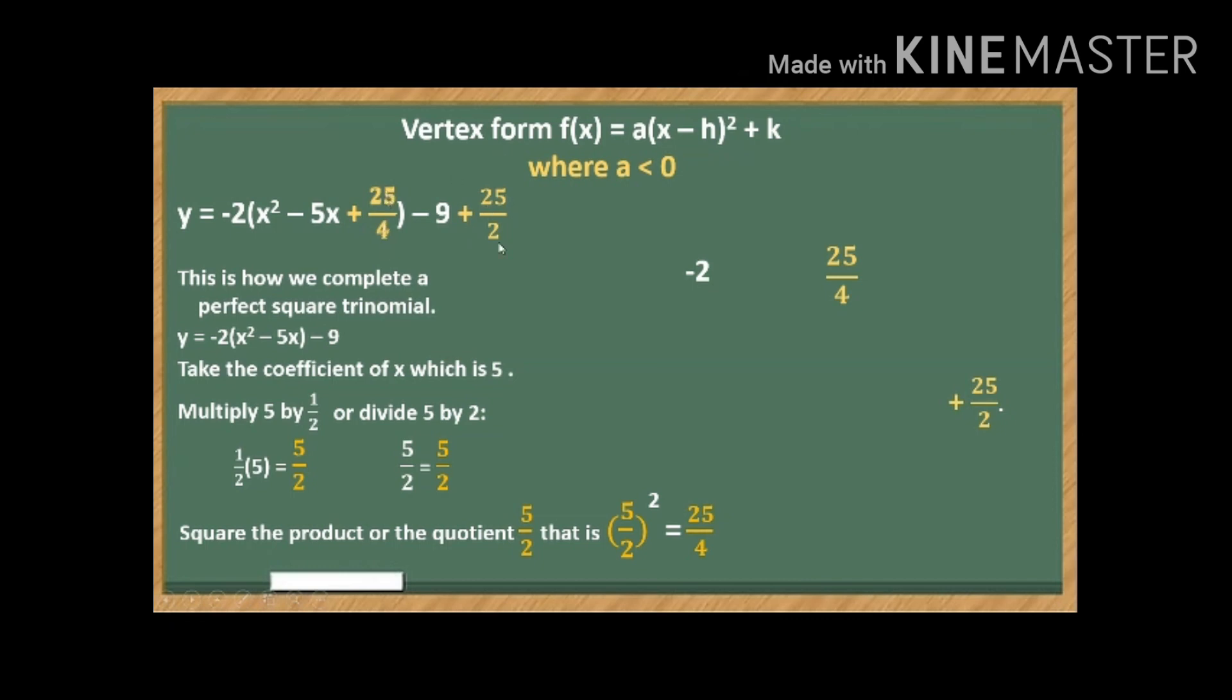How about plus 25 over 2? So let me show you again. So we copy the negative 2. Then 25 over 4, which we have obtained earlier, multiply them and the product is negative 25 over 2. Why 2? Because 2 here and 4 here can be reduced to lowest term, dividing each by positive 2.